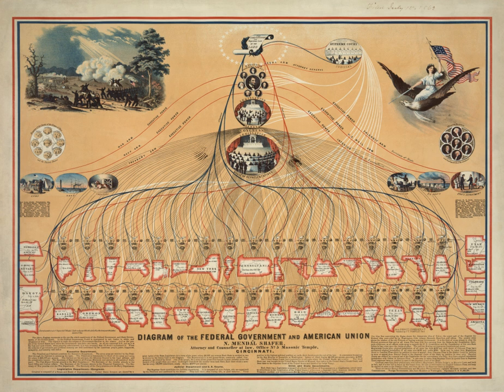Congressional oversight is intended to prevent waste and fraud, protect civil liberties and individual rights, ensure executive compliance with the law, gather information for making laws and educating the public, and evaluate executive performance. It applies to cabinet departments, executive agencies, regulatory commissions, and the presidency.